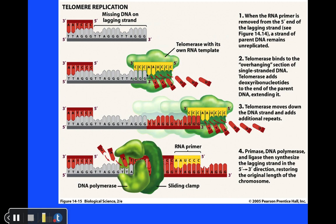Telomerase, shown here in green, extends the ends of our chromosomes so that shortening doesn't become a problem generation after generation. Telomerase has a piece of RNA that serves as a template; it links onto the end of the unreplicated portion of the chromosome, extends it, and then new DNA bases can be added normally. In many of our cells where telomerase is active, this extends chromosome length so they remain fully functional generation after generation. That concludes our brief discussion of DNA replication.